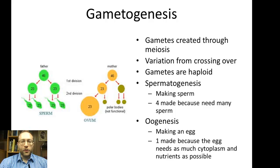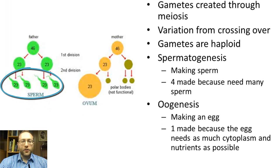You need to know that the gametes are haploid. All the other cells in your body are diploid, meaning there are two copies of every chromosome, and the sperm and eggs have one copy of every chromosome. One big difference between spermatogenesis and oogenesis is that in spermatogenesis four sperm are produced, and in oogenesis one egg is produced.